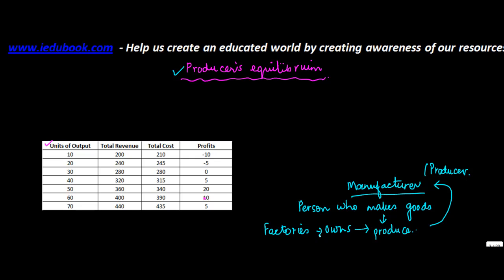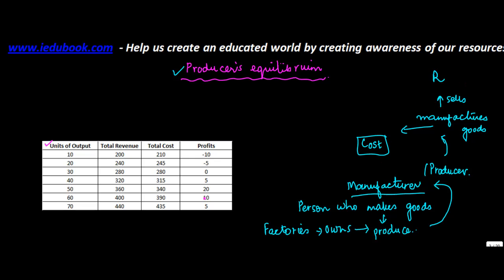Now we all know that nobody does this kind of work for charity. If he's producing something, why is he doing it? The producer manufactures goods, and as he manufactures goods he incurs a cost. And when he sells the good, he earns revenue or income. The difference between the revenue and the cost is the profit.